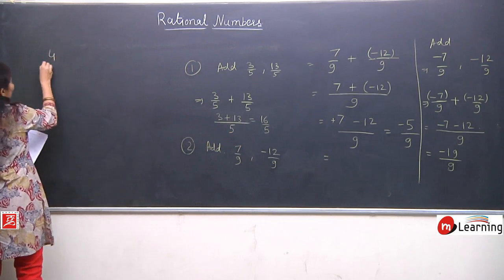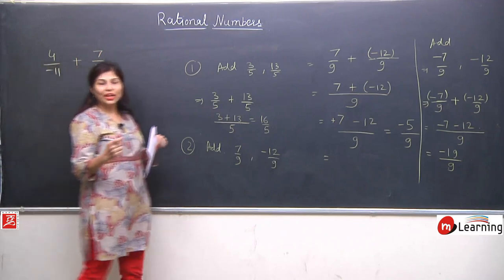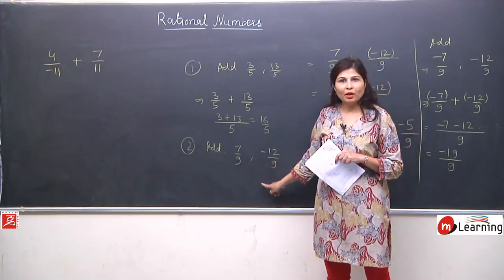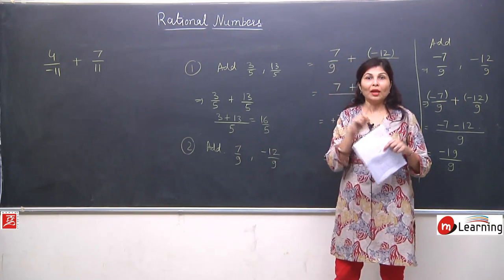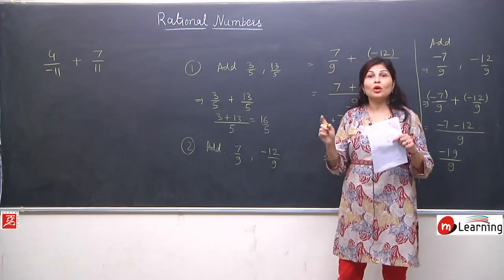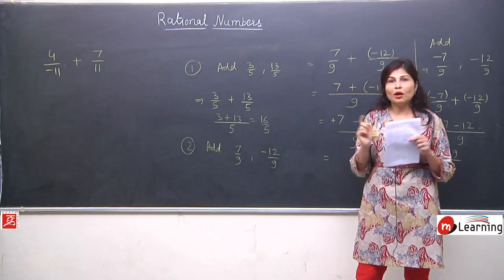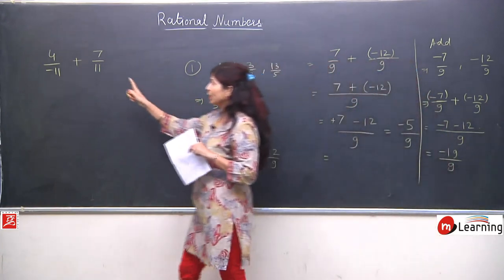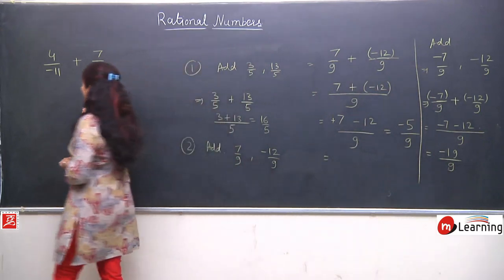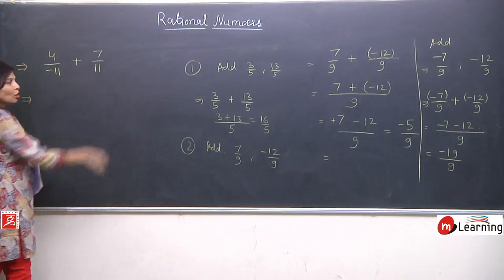Now a different kind of question: add 4 upon minus 11 plus 7 upon 11. Students, pay attention — until now the denominators were the same and their signs were also the same. But in this question the denominator is the same numerically, but the signs are different. This can happen because rational numbers are in the form P upon Q where P and Q are integers, so the denominator can also have a negative sign.